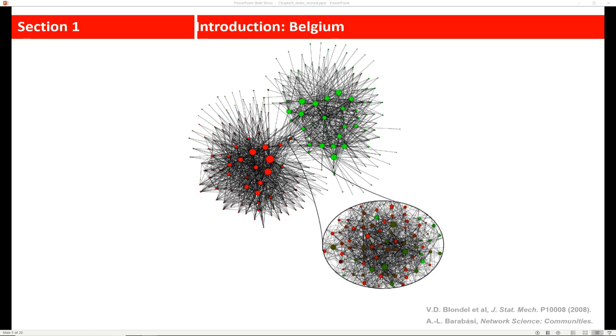So in 2007, Vincent Blondel and his students developed an algorithm to identify the underlying structure of Belgium. And so they used the mobile phone network and placed individuals next to whom they regularly called on their phone. So the algorithm revealed, you can see here, that Belgium's social network is broken into two large clusters of communities and individuals in these clusters rarely talk with individuals from the other clusters.